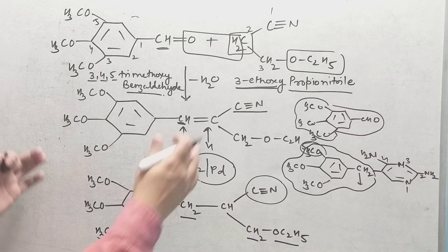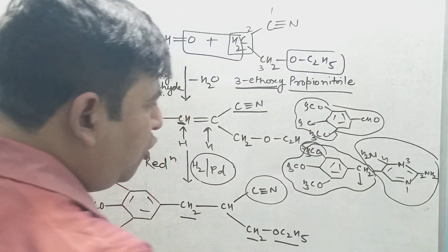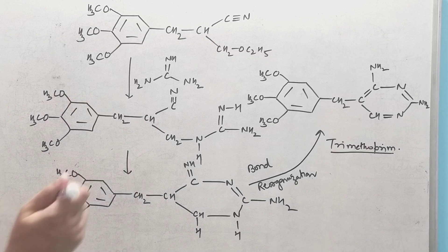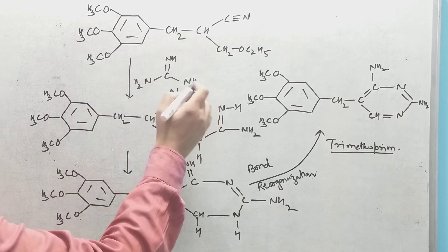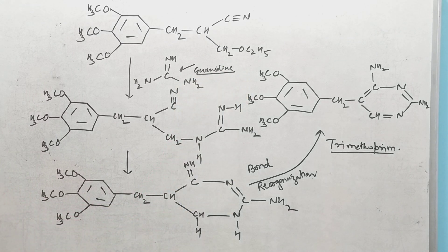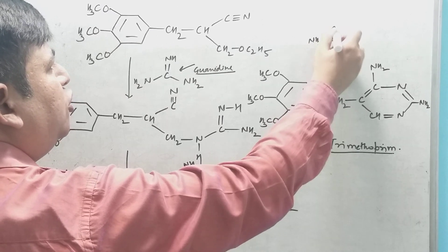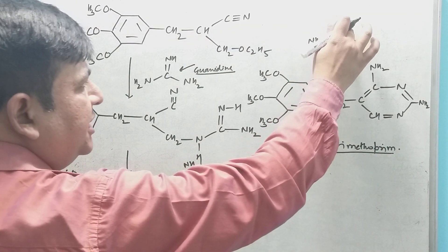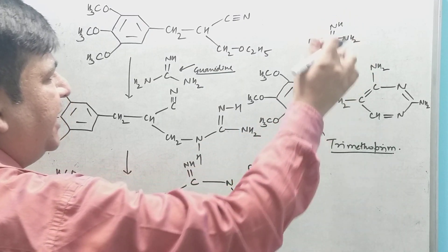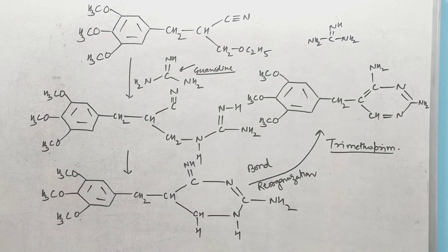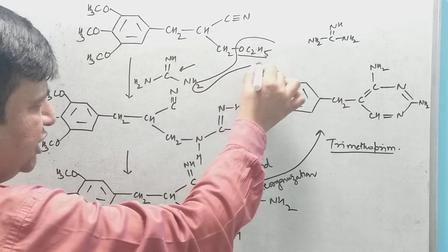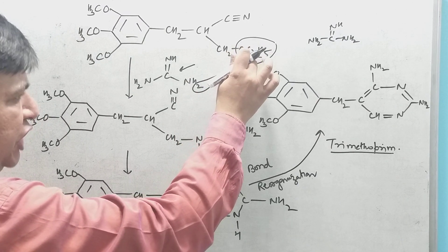After hydrogenation, we proceed to the cyclization step. This intermediate reacts with guanidine. Guanidine is derived from urea (NH2-CO-NH2) by replacing the oxygen with NH, giving the guanidine moiety. The OC2H5 group of the intermediate reacts with an NH2 of guanidine.